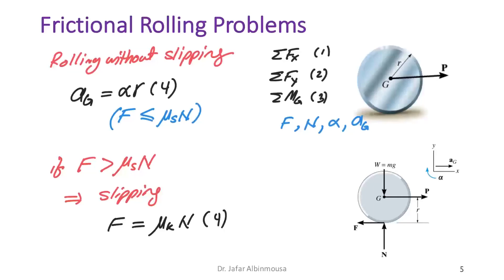With f = μ_k·N as the fourth relation, we re-evaluate the unknowns f, N, α, and a_G using the same three equilibrium equations.